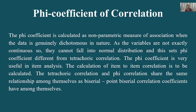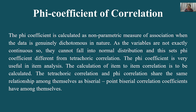The phi coefficient is calculated as a non-parametric measure of association when the data is genuinely dichotomous in nature — यानि यहाँ जो variable है वो natural dichotomy होनी चाहिए। ये non-parametric measure है। Parametric वो होता है जो normal distribution को follow करता है — non-parametric इसका मतलब normal distribution को follow नहीं करेगा। Tetrachoric parametric measure है — phi non-parametric है।